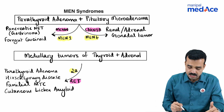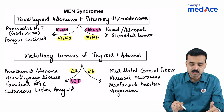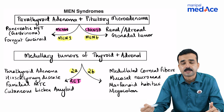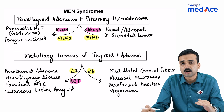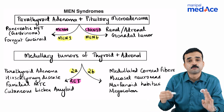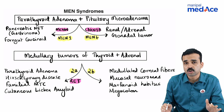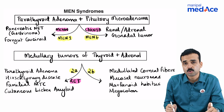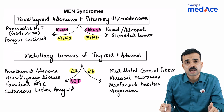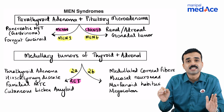The same gene mutation can lead to MEN2B, which is also known as MEN3, whereby the combination of medulla tumors occurs along with the four M's: medullated corneal fibers, mucosal neuromas, marfanoid habitus, and megacolon. This is all about MEN syndromes.